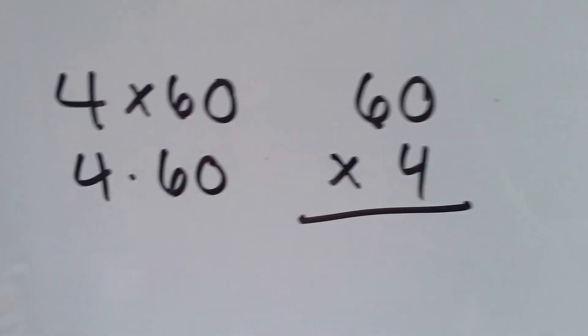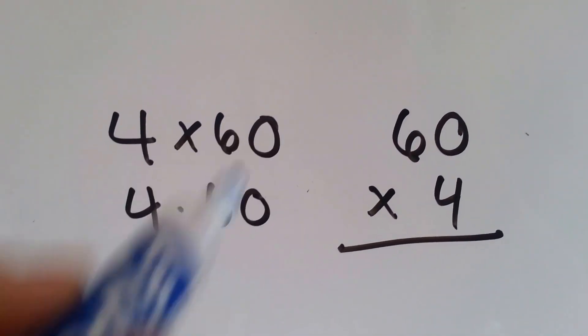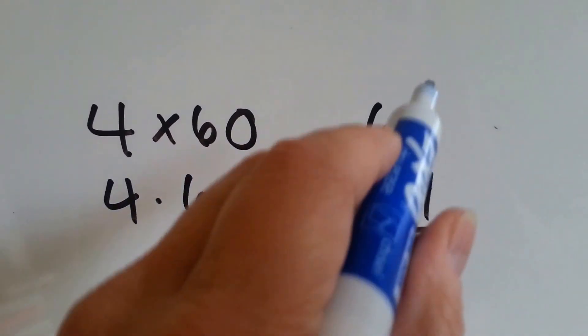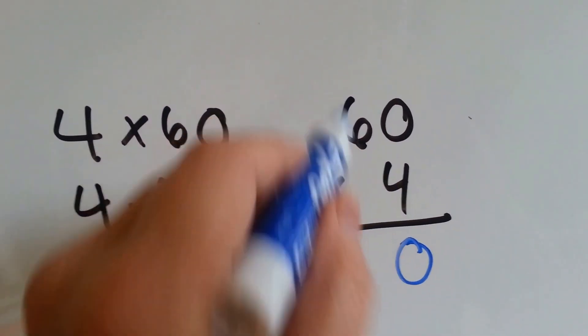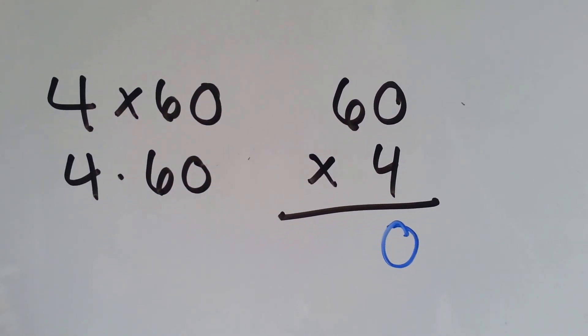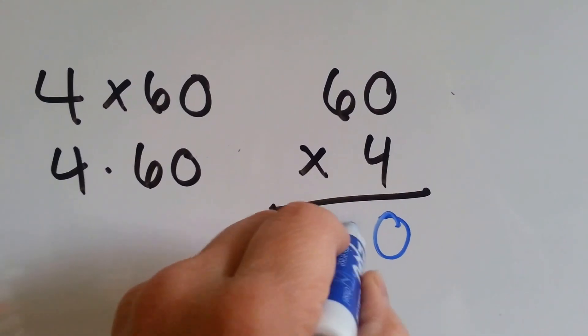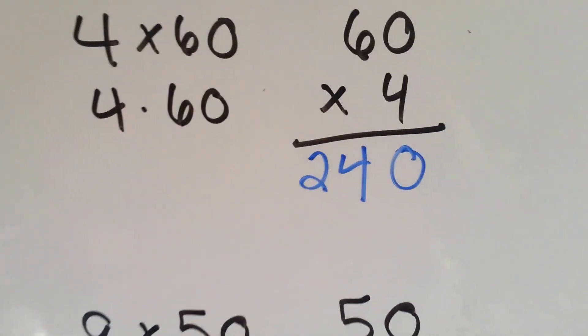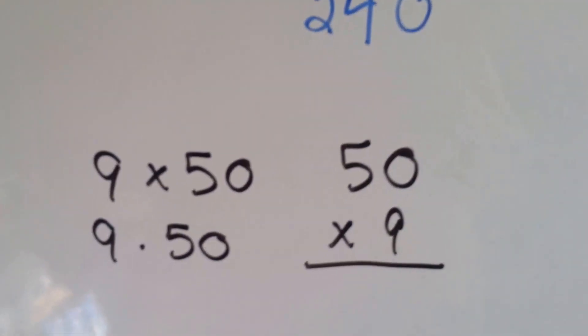Let's try another one. 4 times 60. With a dot, it's written as 4 times 60. 4 times 0 is 0, and 4 times 6 is 24. Memorize those times tables. You'll go very, very slow doing your math work if you don't have them memorized.